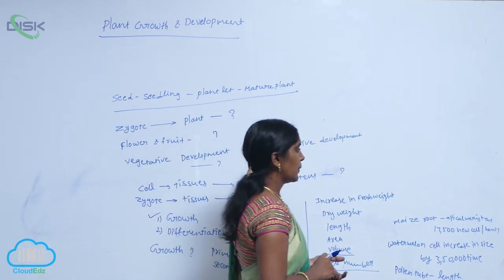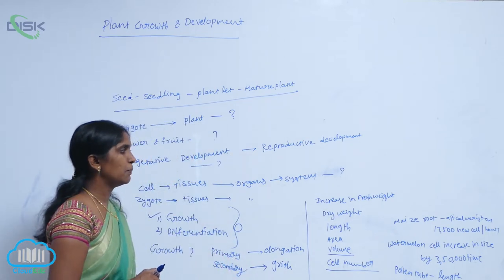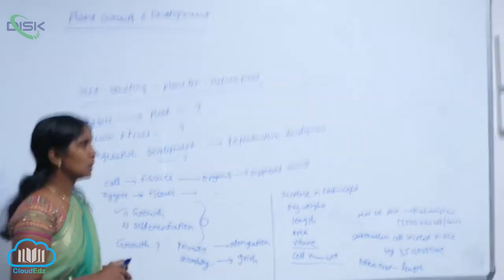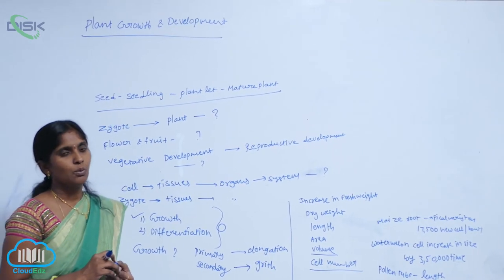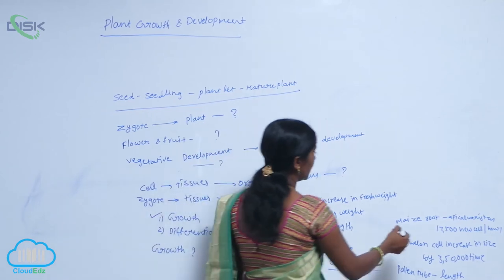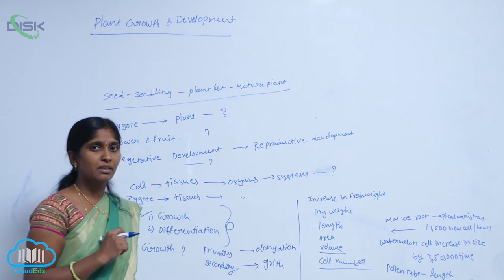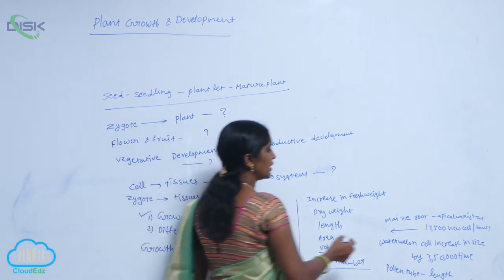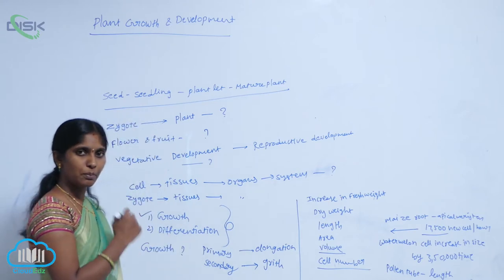For example, you see here, the apical meristem in the root tip multiply 17,500 new cells per hour. What it indicates here? It indicates the growth is measured in the form of cell number. So the cell number is given per particular time. So this is one type of parameter.